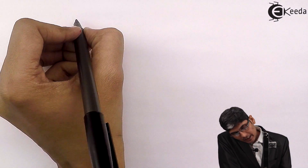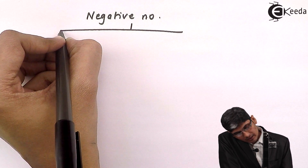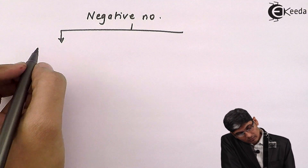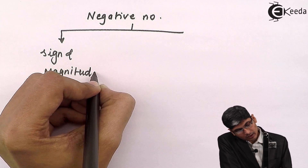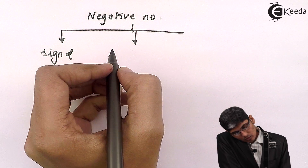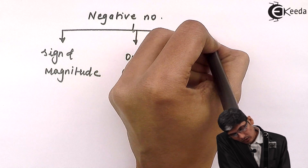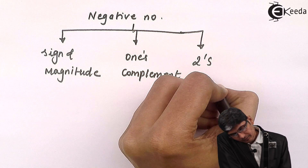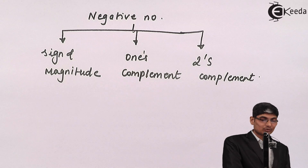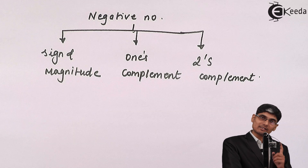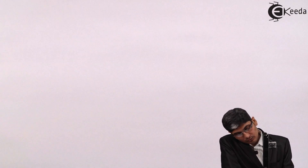Negative numbers are represented using three basic ways. The first method is called sign and magnitude, the second is called one's complement, and the third is called two's complement. So we have three basic methods to represent a negative number. Let us see the first one.